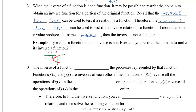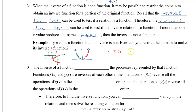We can restrict the domain to fix this. For y = x², one way is to only take the right half of the parabola, restricting the domain to x ≥ 0. We can also take the left half and restrict the domain to x ≤ 0.